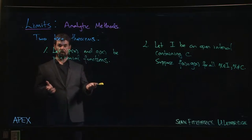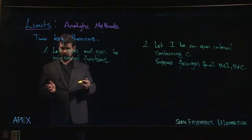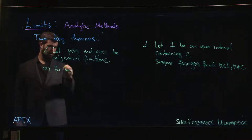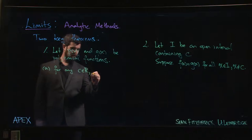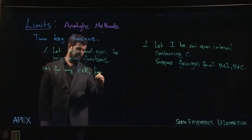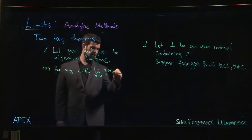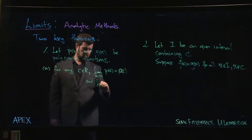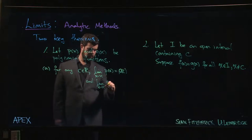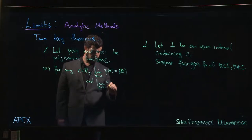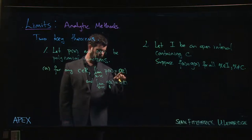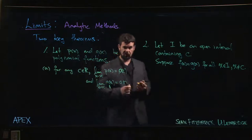The first has to do with polynomial functions. So P and Q are polynomial functions. The first part says simply that for any real number C, the limit as X approaches C of P of X equals P of C. Similarly, the limit as X approaches C of Q is Q of C. So the first part just says that any polynomial function can be evaluated by direct substitution, as we saw last video.